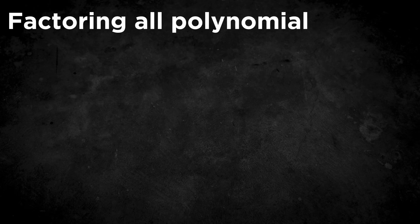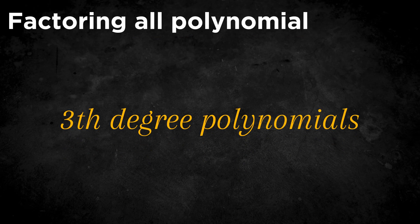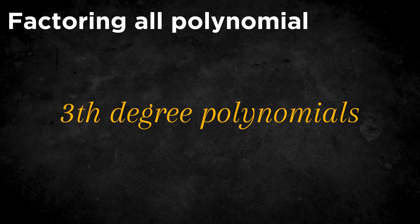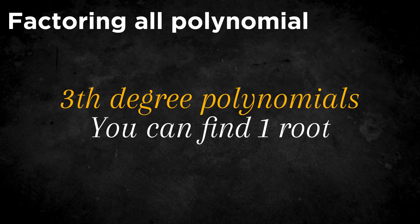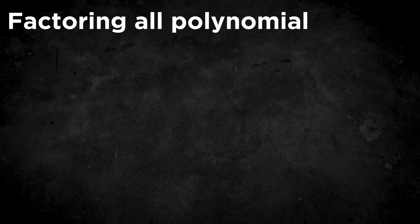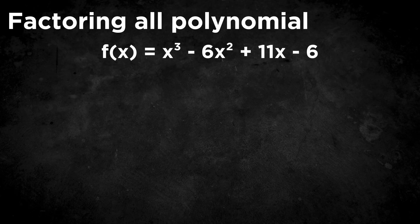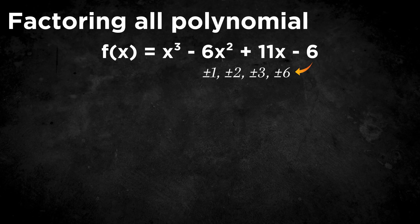Now let's extend this to polynomials of higher degrees. For third-degree polynomials, or cubics, we can often find at least one real root. There is a little trick to find one. Let's look at this example: f(x) equals x cubed minus 6x squared plus 11x minus 6. Let's look at the constant term, minus 6, and list every divisor of minus 6: plus or minus 1, plus or minus 2, plus or minus 3, and plus or minus 6. The trick is that at least one of these numbers will be a root of the function.